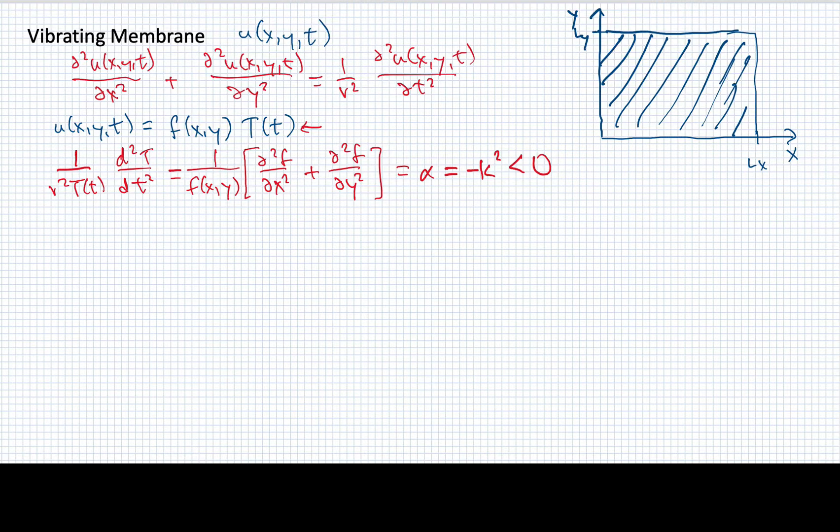For the ordinary differential equation, so I'll call that part 1, what we'll have is a solution or an equation that we have to solve that looks something like this. And it'll be second derivative of t, v squared alpha, t of t. And we already know that this is going to lead to oscillatory solutions.